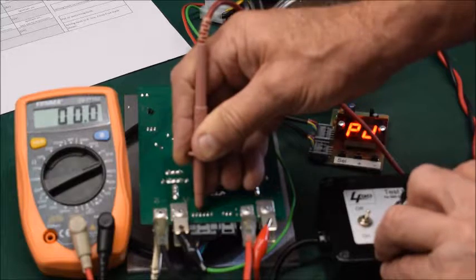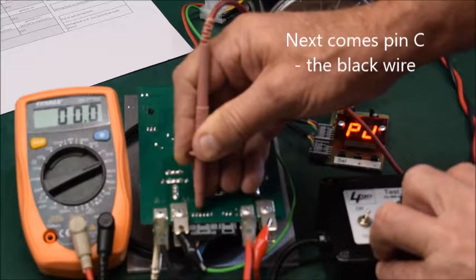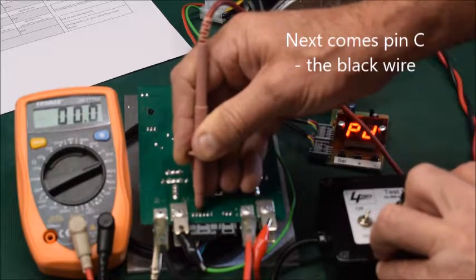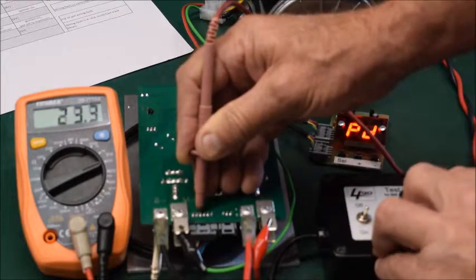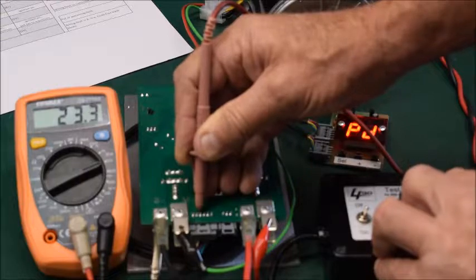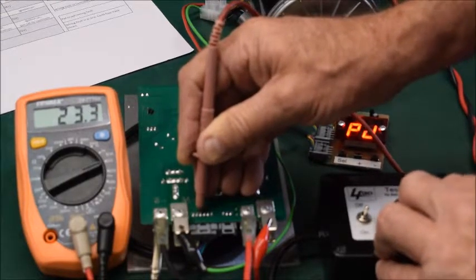Now move the meter lead to pin C which corresponds to the black wire. With the ignition on in the direction forward this should be zero. With the direction set to reverse this should be the same as your battery voltage. Write the values in the grey boxes on the sheet.